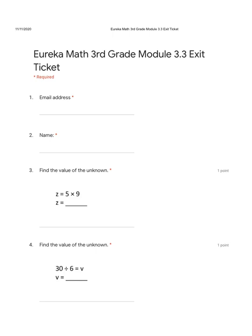Okay, so our first question we have, find the value of the unknown, right here. So the unknown, we look at this problem, Z equals 5 times 9. Z is our unknown. We're trying to figure out what does Z mean? What is the value of Z? Z equals 5 times 9. We could also say 5 times 9 equals Z.